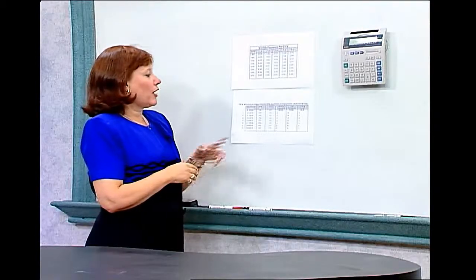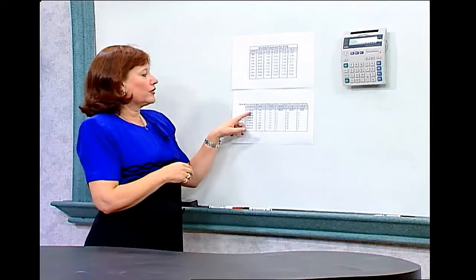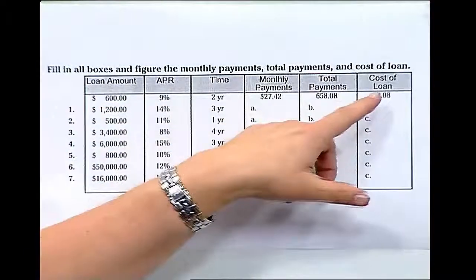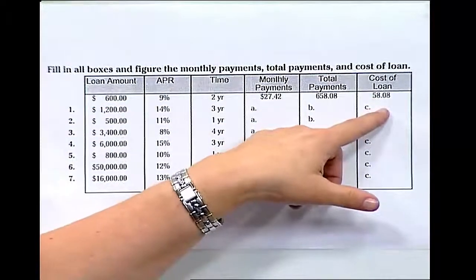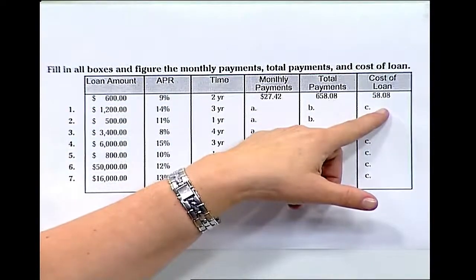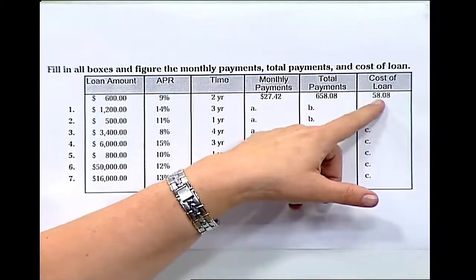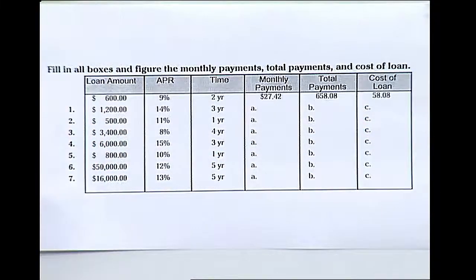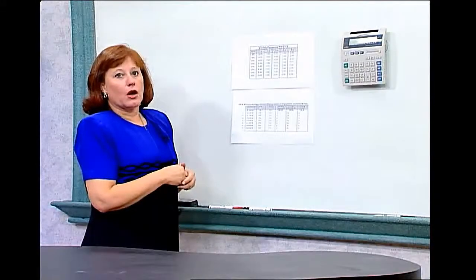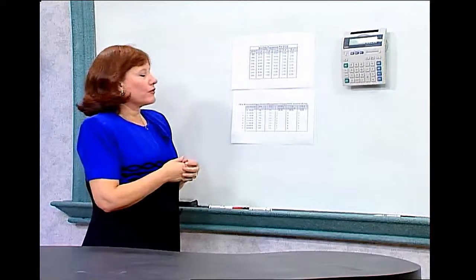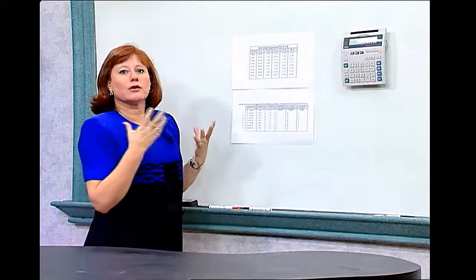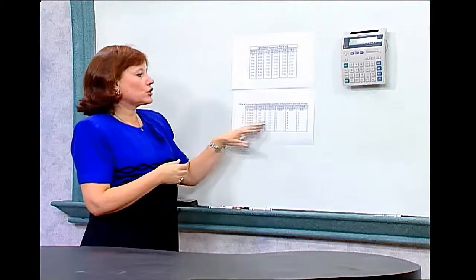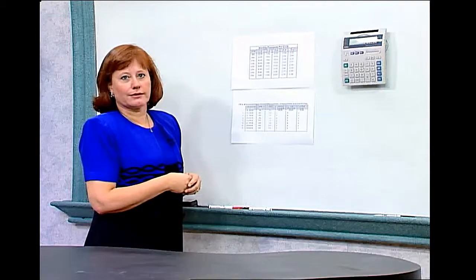When the loan is paid off, you will have paid the loan amount of $600, plus the cost of the loan, which is $58.08. That's almost a 10% increase over the original loan amount. Remember, when figuring out these loans, you want to calculate the total cost of the loan, and this chart will help you get quicker at doing that.